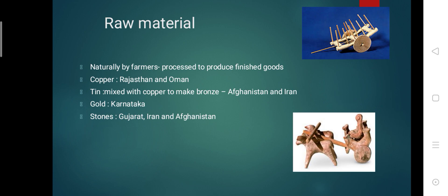The Harappans used metals and ores found naturally. The metals they used include copper, tin, gold, silver, and precious stones. Harappans probably got copper from present-day Rajasthan, and even from Oman, which is situated in West Asia.